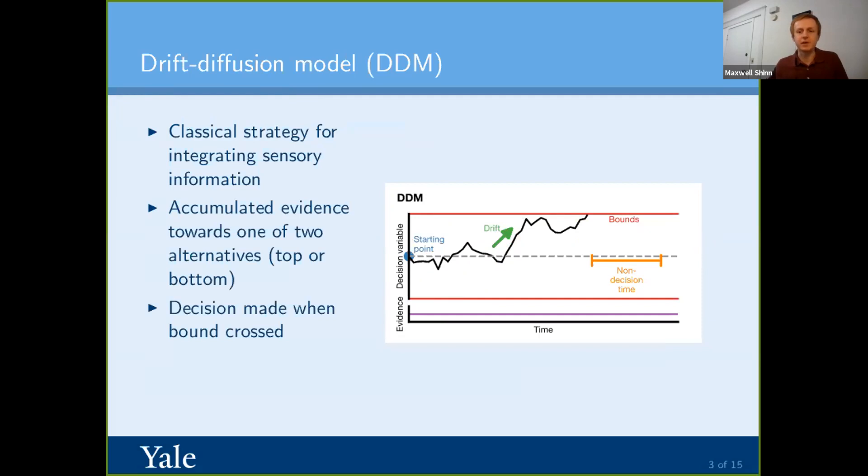And once you hit either the top boundary or the lower boundary, that's considered a decision made. This is a really convenient model because it gives us not only whether we have a correct answer or an incorrect answer, but it also gives us the timing. And so we can simulate a response time distribution. But again, this is just one strategy. This is the strategy of integrating all the information you have.